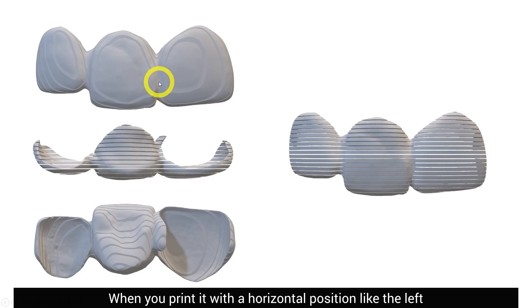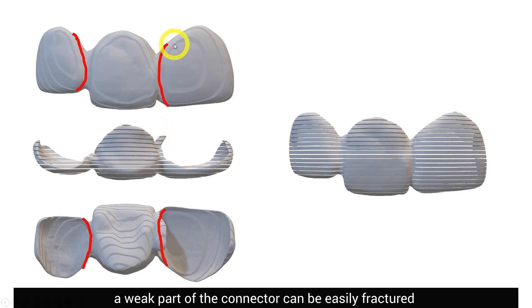When you print it with a horizontal position like the left, a weak part of the connector can be easily fractured because it will create a vertical line.